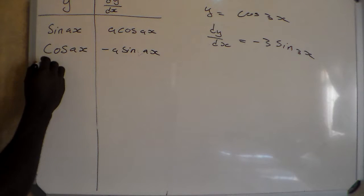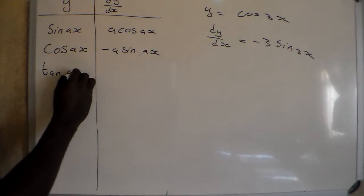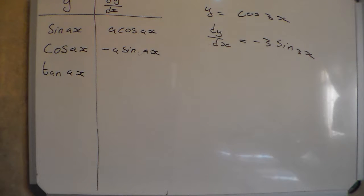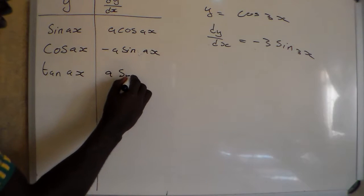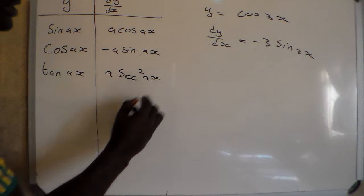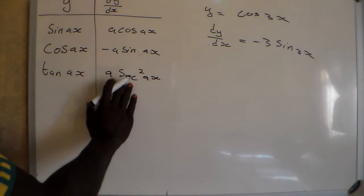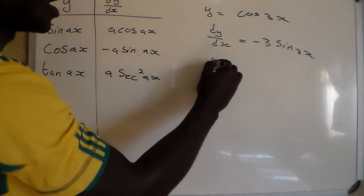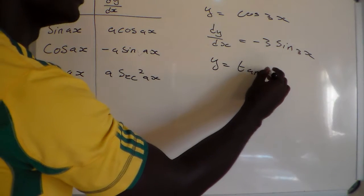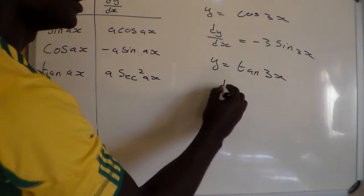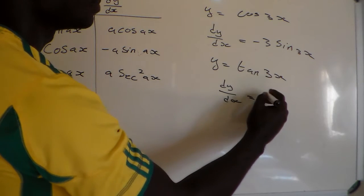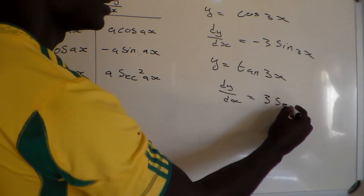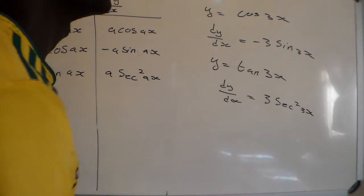So if we're going to derive tan: the derivative of tan(AX) equals A·sec²(AX). For example, if we have Y equals tan(3X), then the derivative, dY/dX, is equal to 3·sec²(3X).